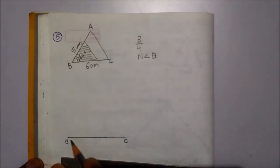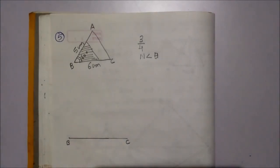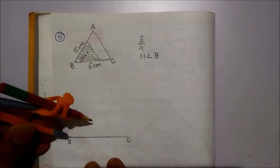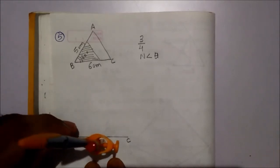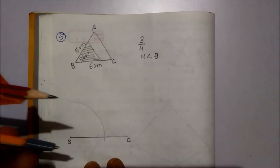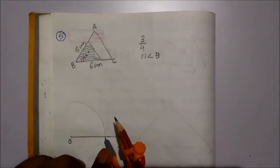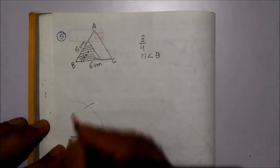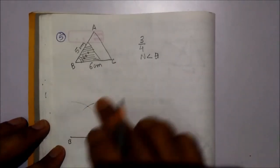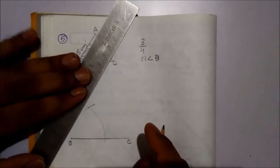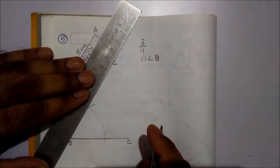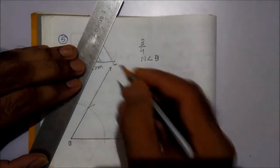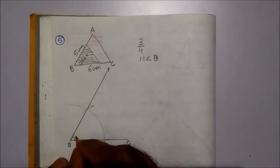We have to draw 60 degree angle from B. By taking appropriate radius and taking B as a center, give an arc. Don't change the radius. From this point, intercept the arc. Join these two points and extend the ray. So this is the angle 60 degrees.